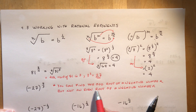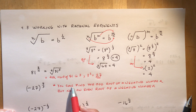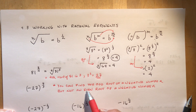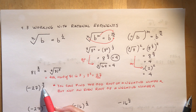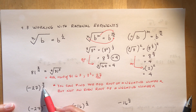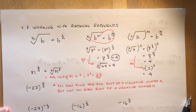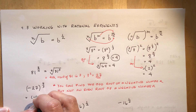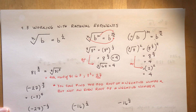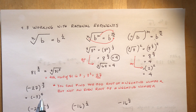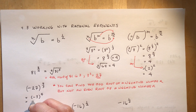An important note: you can find the odd root of a negative number, but not the even root of a negative number. So the cube root of −27 is −3, because (−3) × (−3) = 9, and 9 × (−3) = −27. Then (−3) to the power of 4: 3 × 3 = 9, × 3 = 27, × 3 = 81 — which we just calculated above.